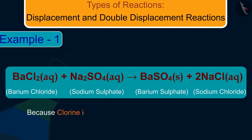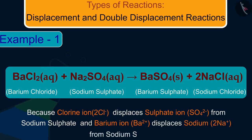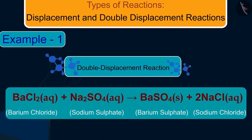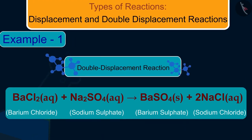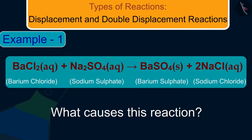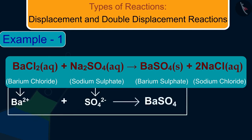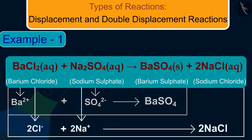How is this reaction a double displacement reaction? Because the chloride ion (2Cl⁻) displaces the sulfate ion (SO₄²⁻) from sodium sulfate, and the barium ion (Ba²⁺) displaces sodium (2Na⁺) from sodium sulfate. The white precipitate of BaSO₄ is formed by the reaction of SO₄²⁻ and Ba²⁺, and the other product formed is sodium chloride, which remains in the solution.